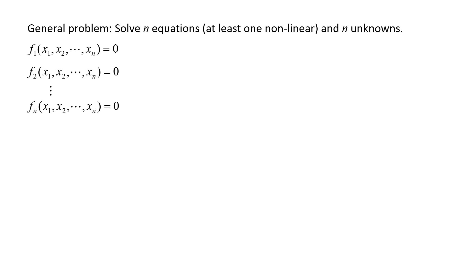Each equation has the form of some function of n unknowns equals 0. We label the functions f1 through fn, and the unknowns are labeled x1 through xn. For brevity, we will sometimes omit the unknowns x1 through xn when writing the function names, but keep in mind that f1 through fn can be functions of all the unknowns.